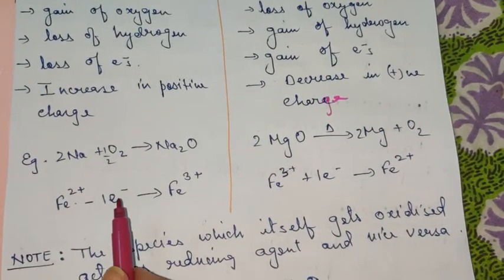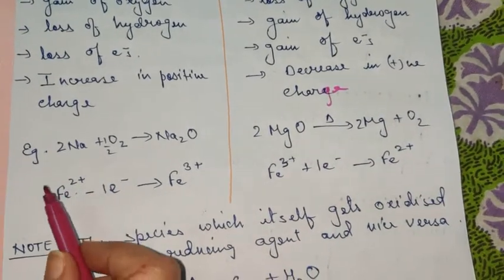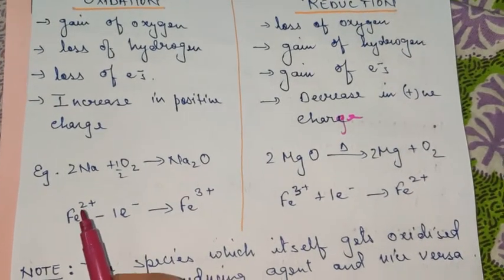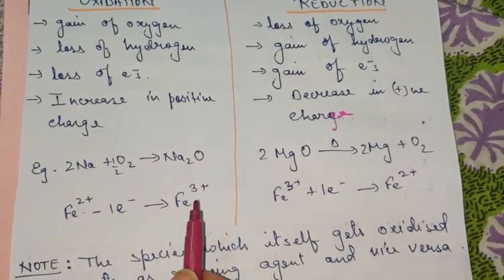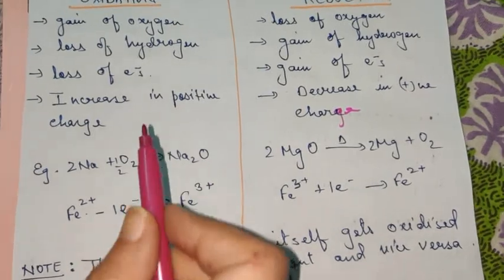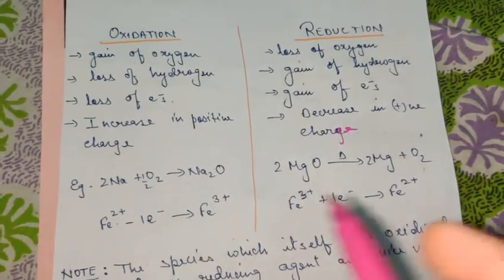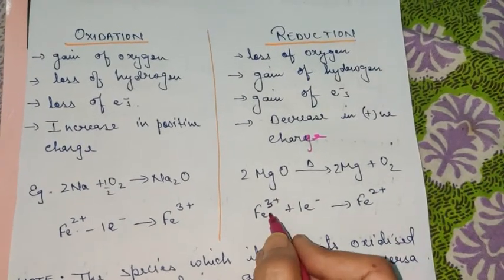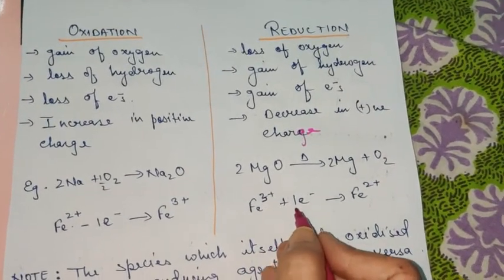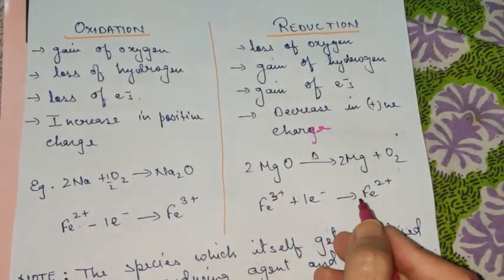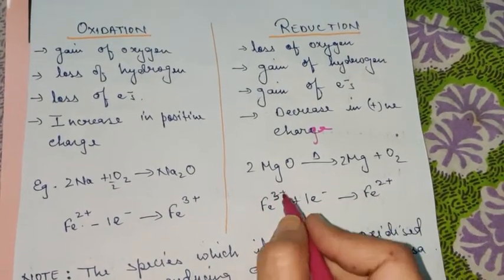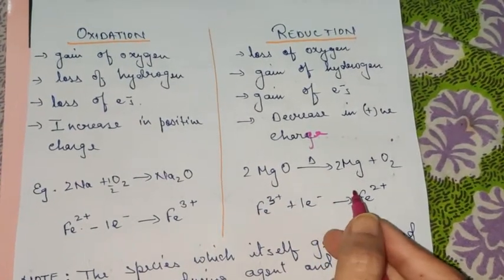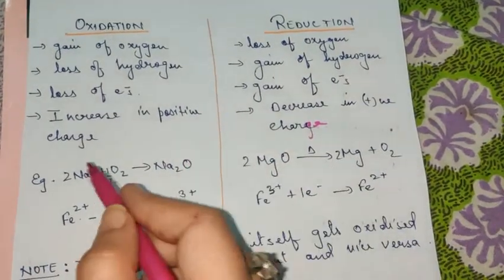Fe2+ loses one electron — Fe already has a 2+ charge. By losing one electron, one more positive charge is added, so Fe2+ gets converted into Fe3+. An increase in positive charge means oxidation. And here Fe3+ gains one electron, so one positive charge is reduced, converting it into Fe2+. A decrease in positive charge means reduction is occurring.